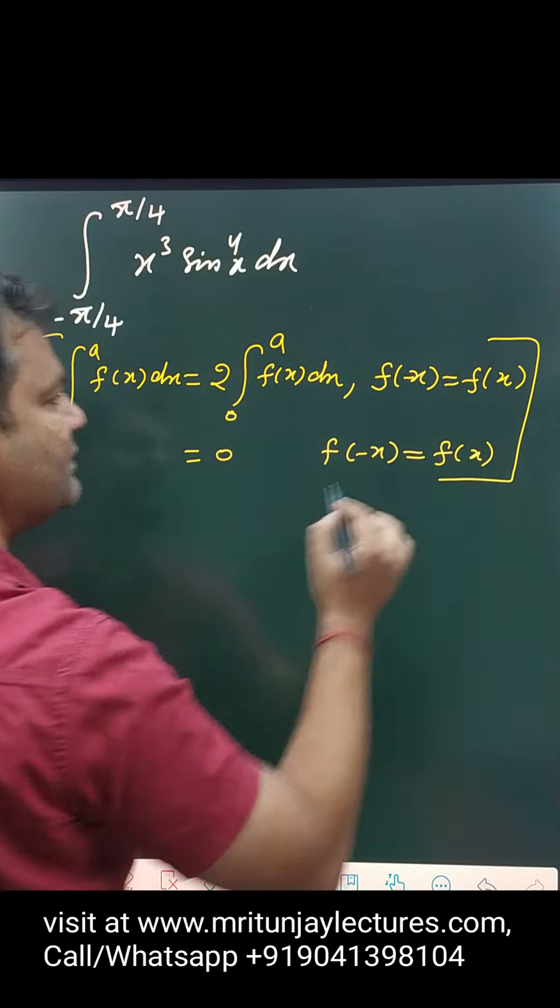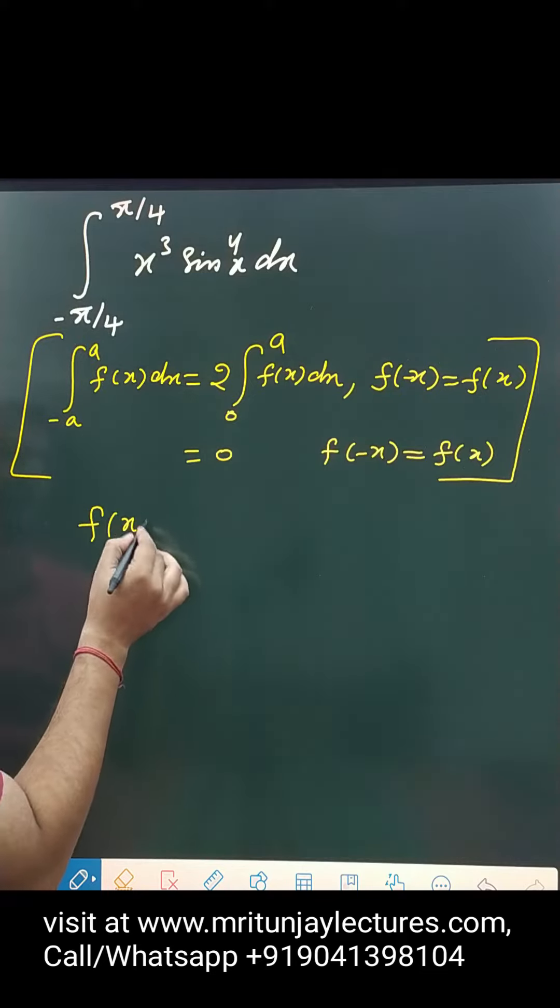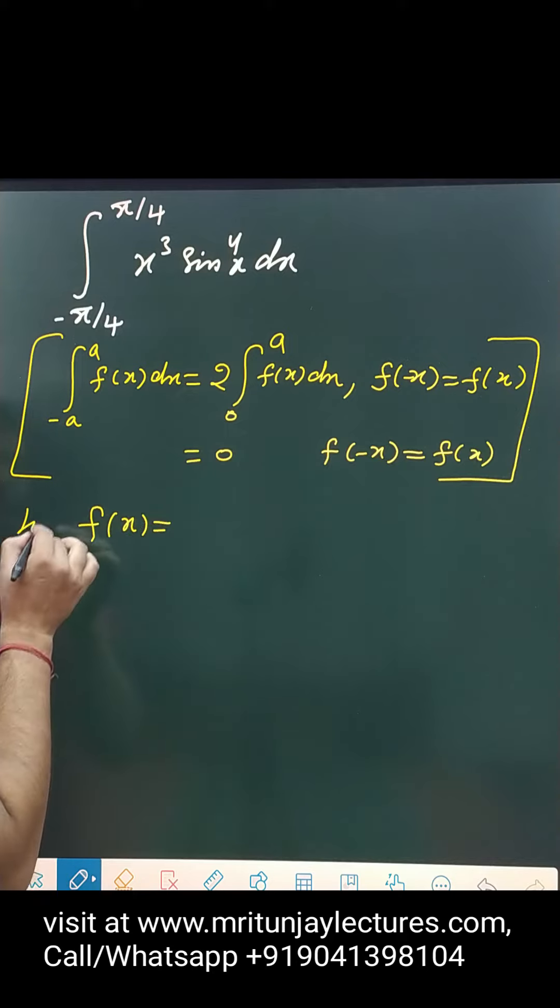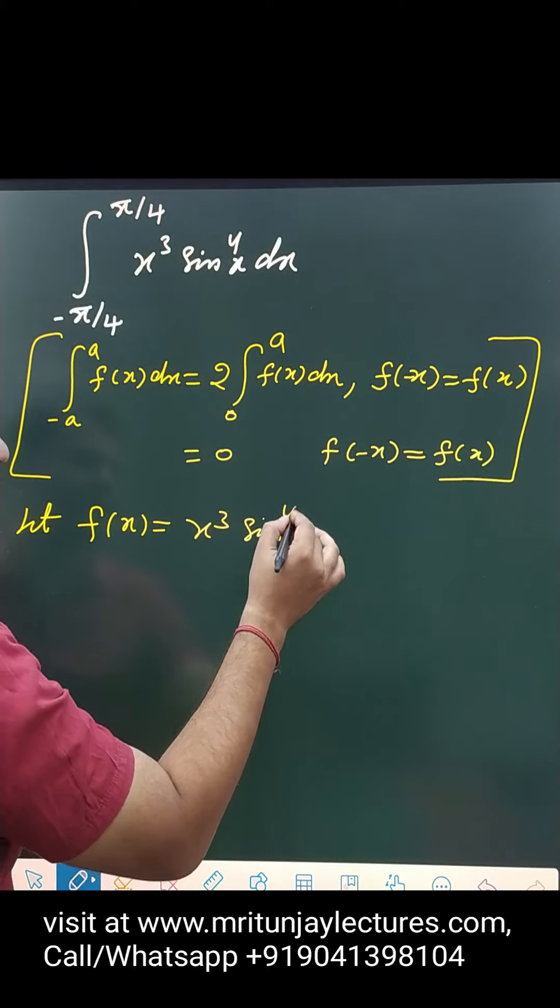So if you see that question, here minus a to a, so that is here minus 5 by 4 to plus 5 by 4. So you compare and that will be taken f of x. So f of x is, let here, x cube sin to whole power x dx.